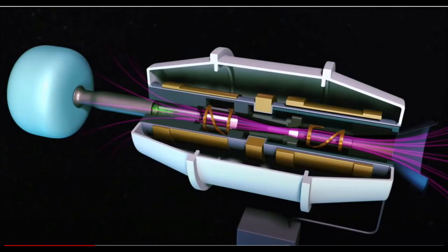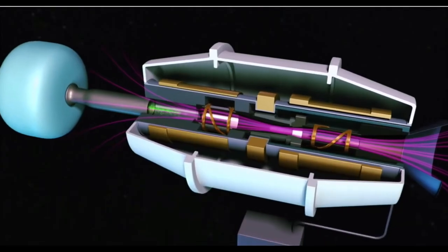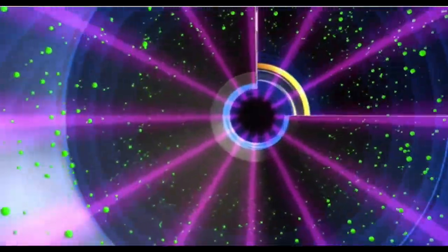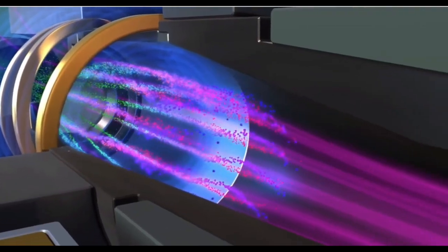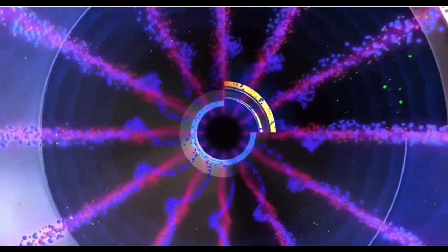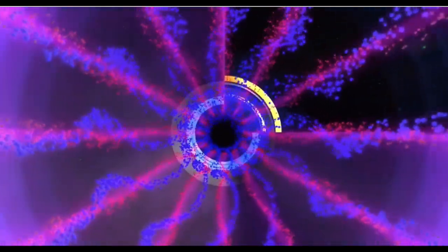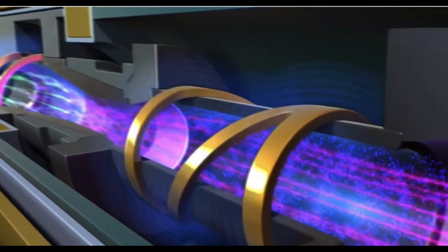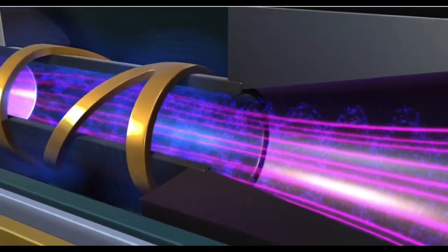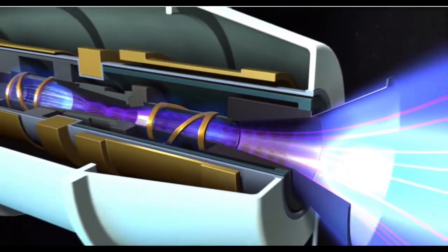Now the VASIMR ionizes the propellant gas in the first chamber as the gas leaves the tank. It does this with radio waves using a device called a helicon. Once the gas is ionized it can be moved and controlled by electromagnetic fields. Powerful superconducting magnets are used to move the plasma along and keep it from coming in contact with the engine components. The next chamber uses another helicon and radio waves to heat the plasma to incredible temperature, actually higher than the heart of the sun. If the magnetic containment failed the propellant would vaporize any material it contacted.